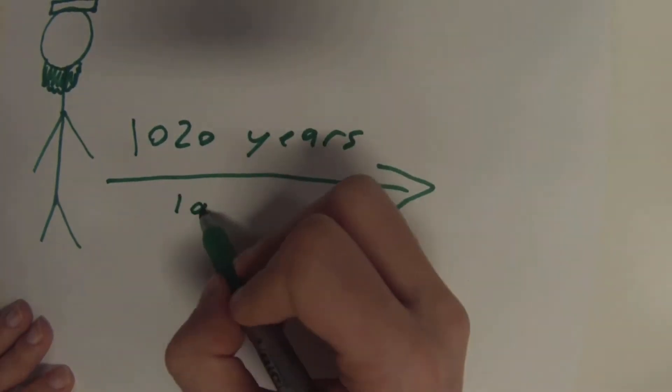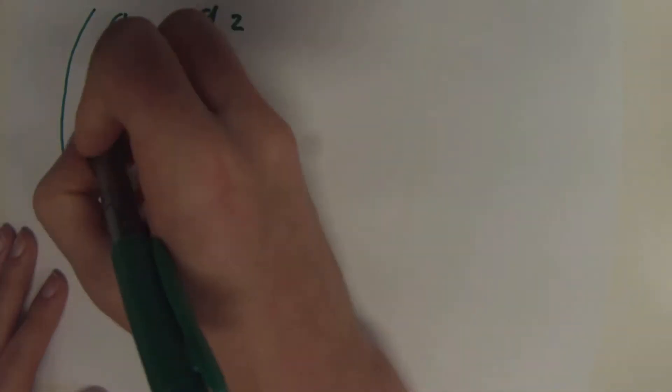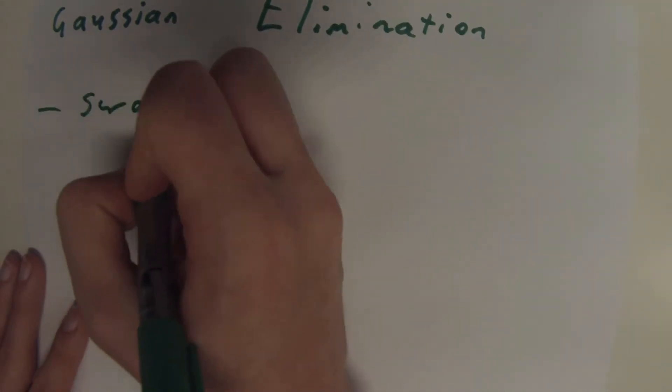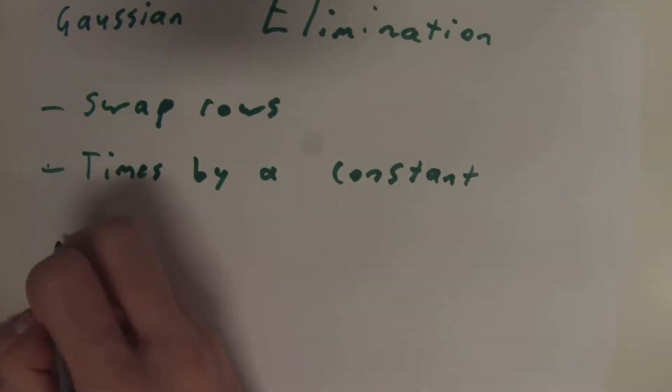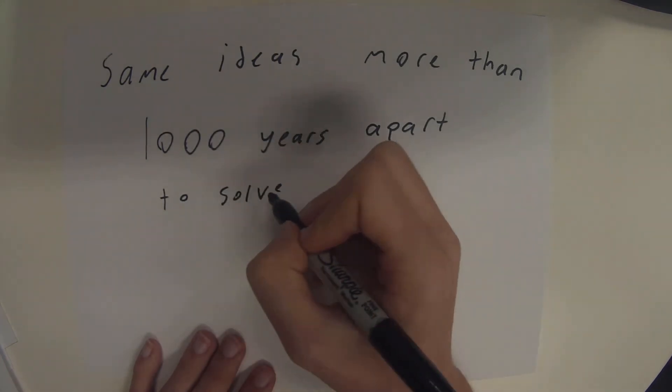Carl Gauss was close to 1020 years after Al-Khwarizmi, still being influenced by his original work on algebra. Being able to solve a matrix, which was in the form of AX equals B, allowing him to solve linear equations through Gaussian Elimination, influenced by Al-Khwarizmi to solve the same problem he did more than a thousand years apart, just using a different way.